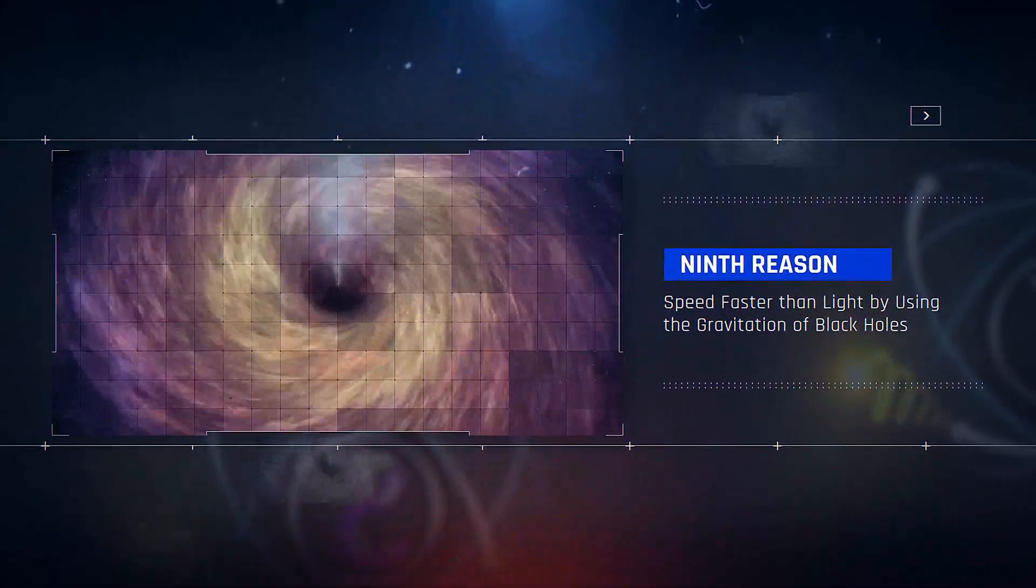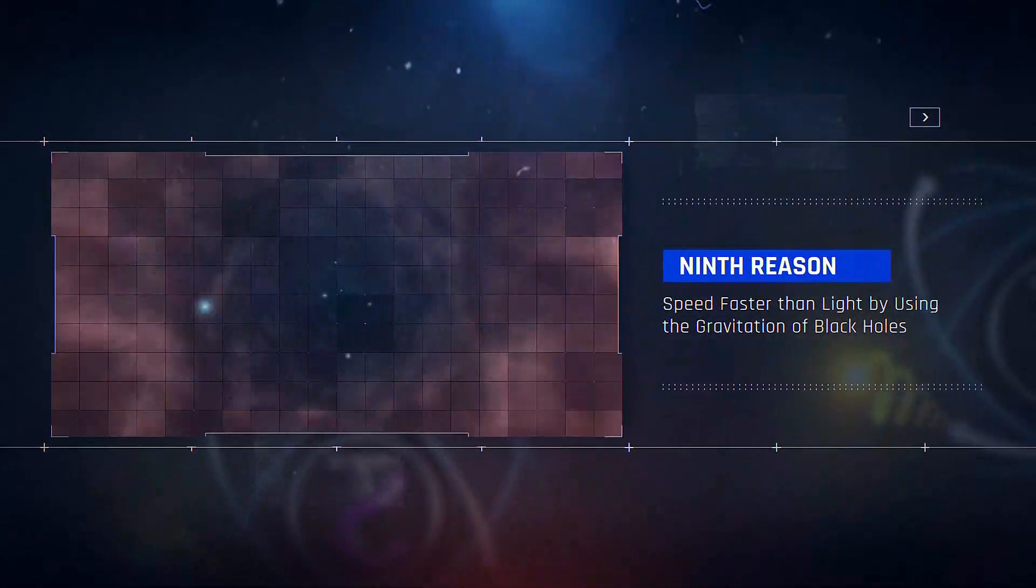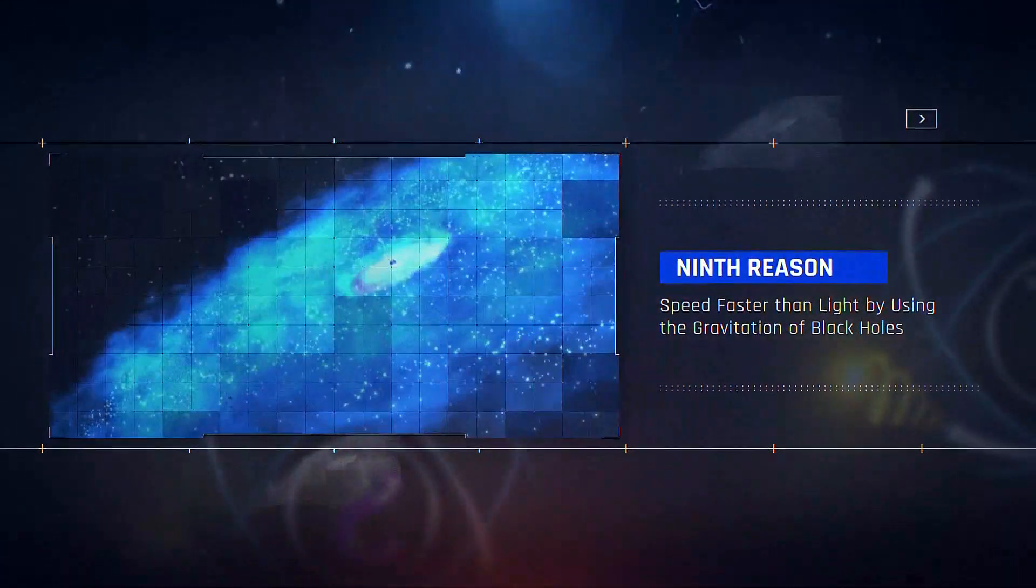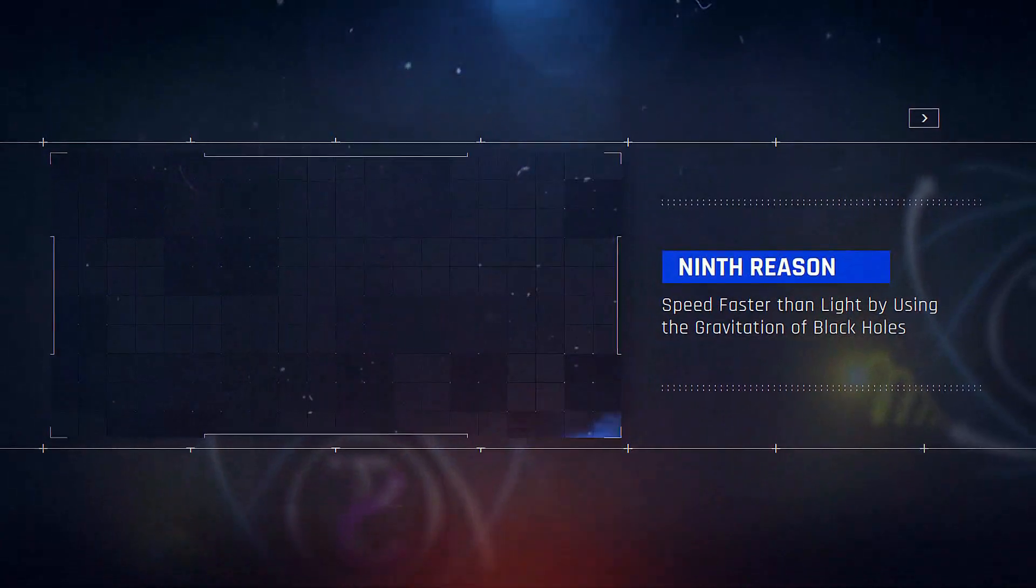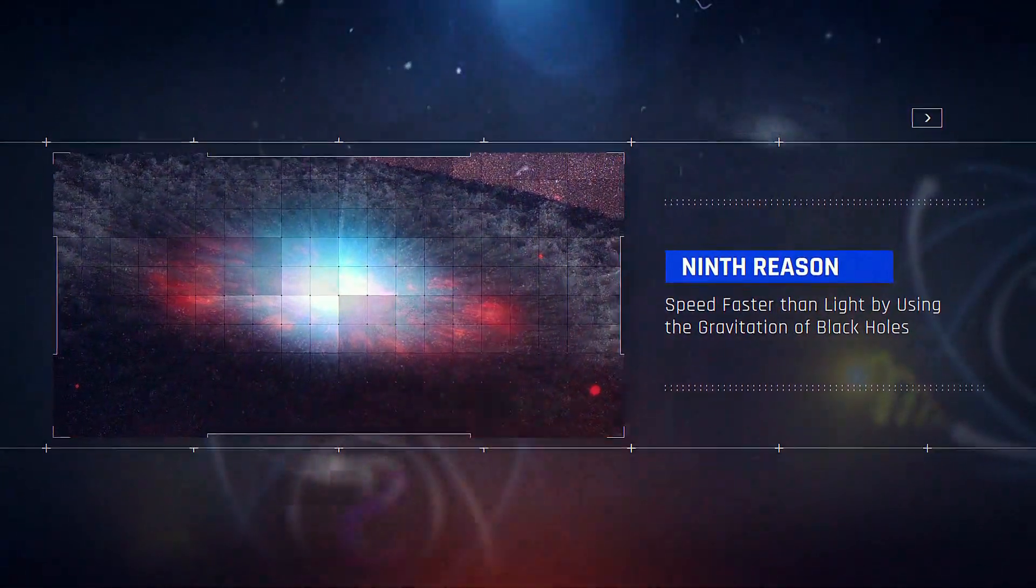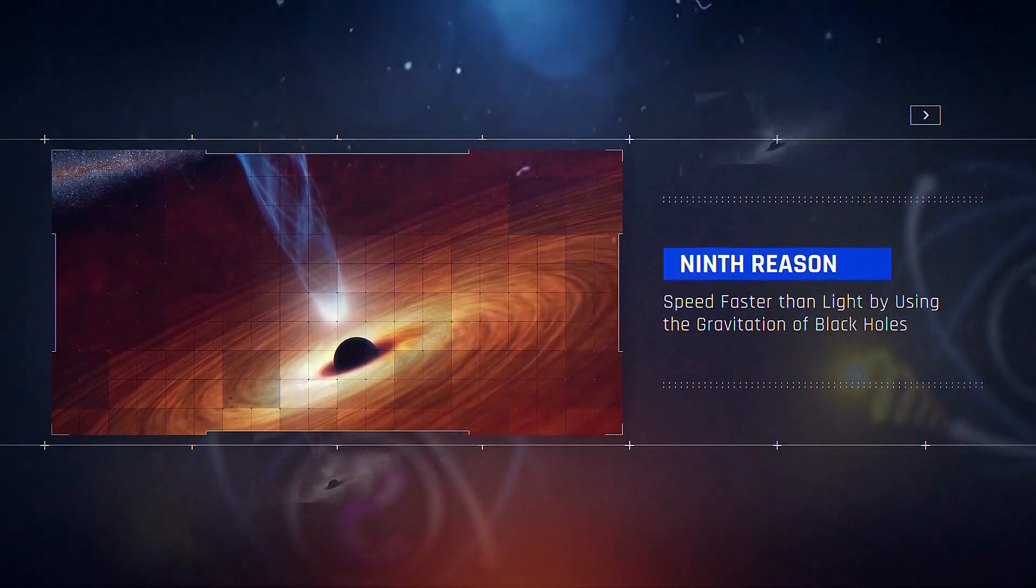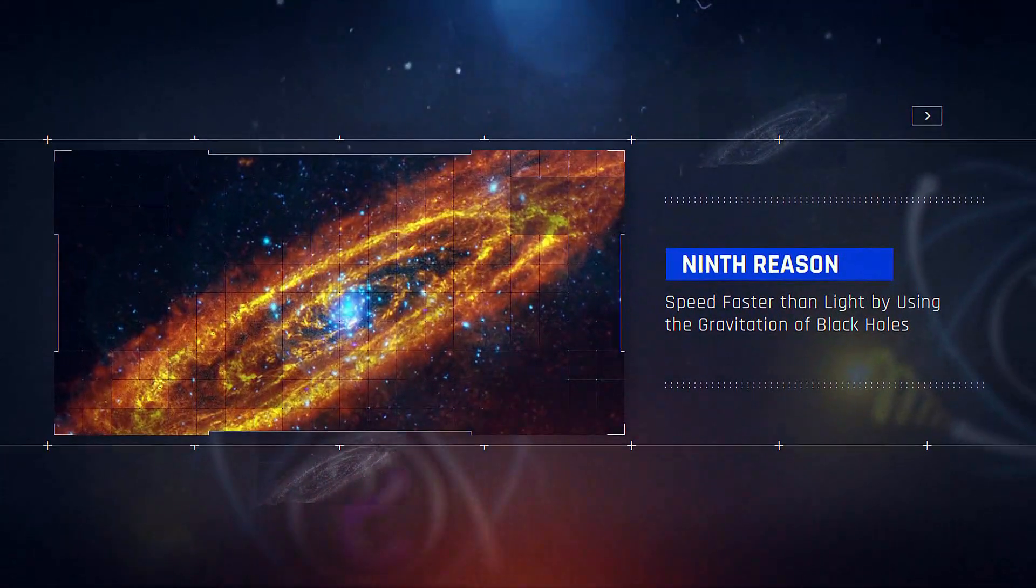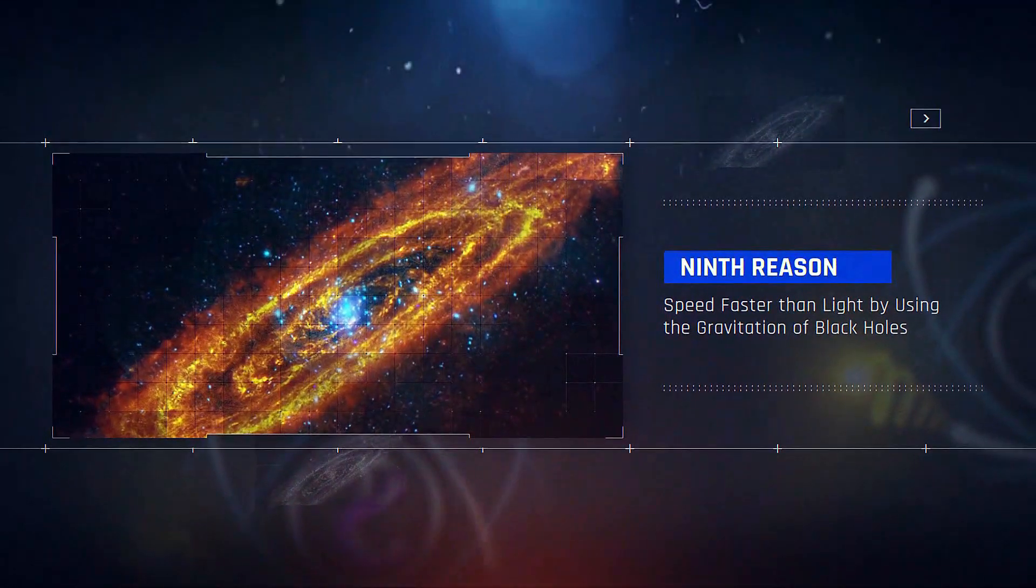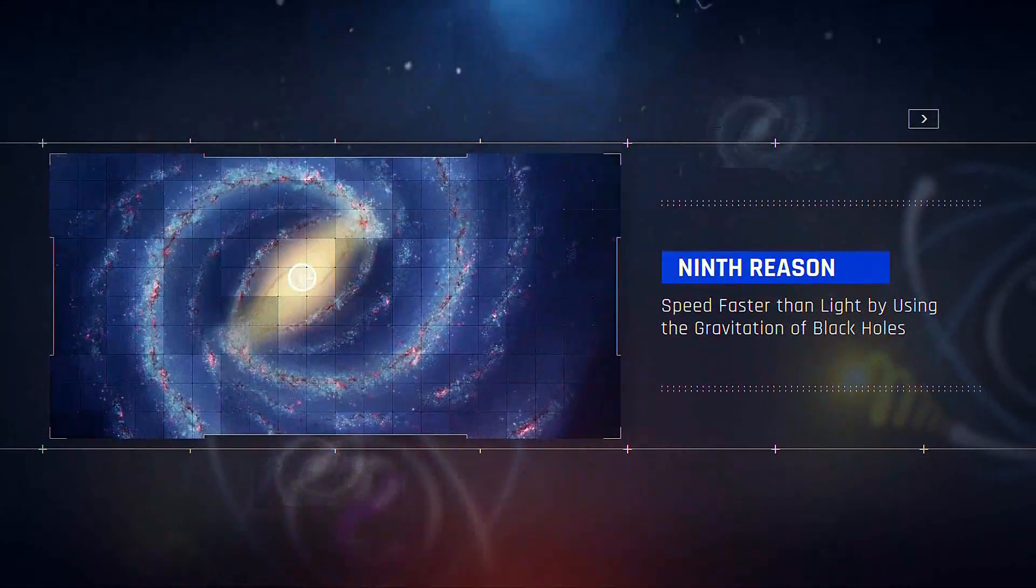9. Speed faster than light by using the gravitation of black holes. Since the gravitation of black holes is so high that it can curve the pathway of photons, and also no light can escape its gravitation, thus it is able to affect light speed. Now imagine a light traveling toward the black hole. The gravitation of the black hole will definitely affect its photons and will certainly increase its speed, making it reach speed faster than the speed of light that we could not see.